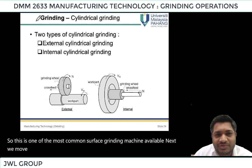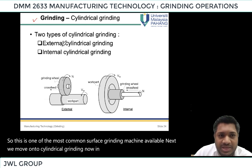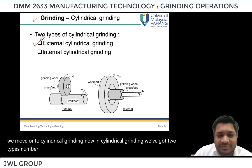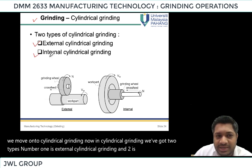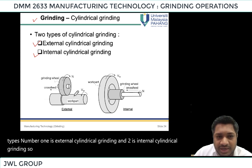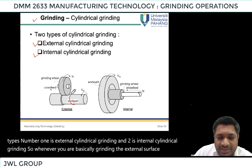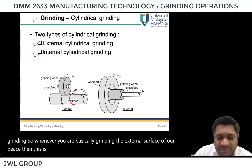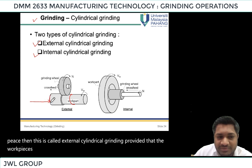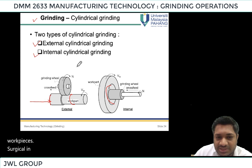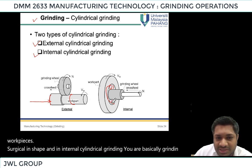Next we move on to cylindrical grinding. In cylindrical grinding we have two types: number one is external cylindrical grinding and number two is internal cylindrical grinding. Whenever you are grinding the external surface of a cylindrical work piece, this is called external cylindrical grinding. In both cases the work piece is cylindrical in shape.